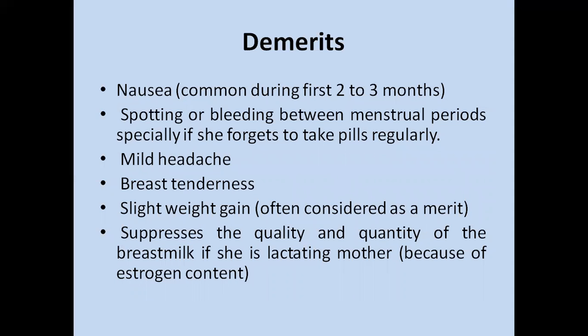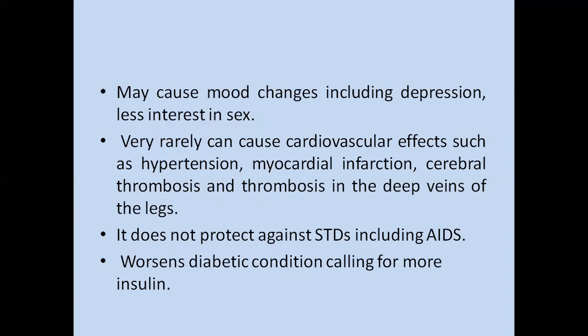Demerits include nausea, mainly during the first 2 to 3 months after starting. Spotting or bleeding between menstrual periods may occur, especially if she forgets to take pills regularly. OCPs suppress the quality and quantity of breast milk if she is a lactating mother. They may cause mood changes including depression and decreased interest in sex. Rarely, they can cause cardiovascular effects such as hypertension, myocardial infarction, cerebral thrombosis, and deep vein thrombosis. They do not protect against STDs including AIDS, and may worsen diabetic conditions requiring more insulin.